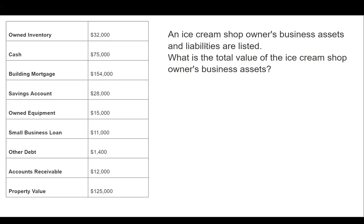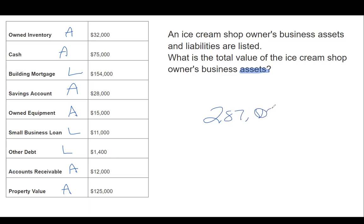An ice cream shop owner's business assets and liabilities are listed. What is the total value of the ice cream shop owner's business assets? Owned inventory is an asset. Cash is an asset. A mortgage is a liability. A savings account is an asset. Owned equipment is an asset. A small business loan is a liability. Debt is a liability. Accounts receivable is an asset, and property value is an asset. We add only the assets: 32,000 plus 75,000 plus 28,000 plus 15,000 plus 12,000 plus 125,000. Total assets equal $287,000.